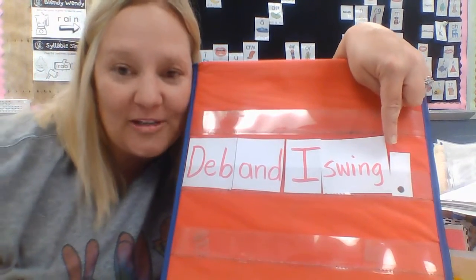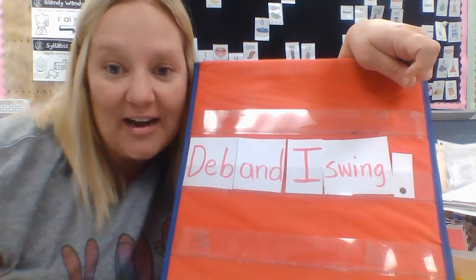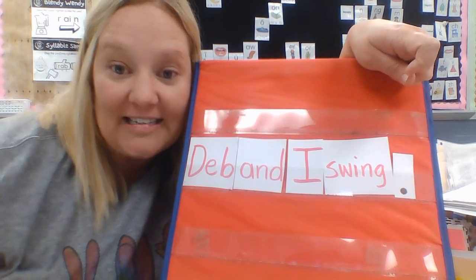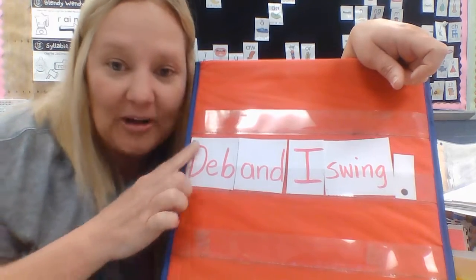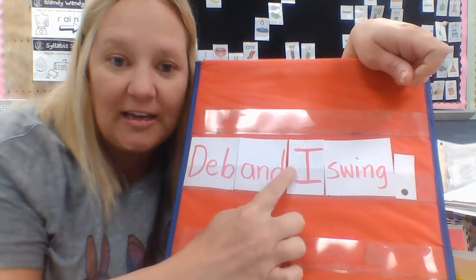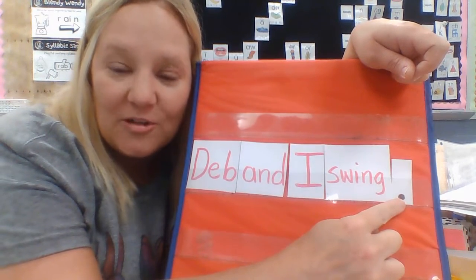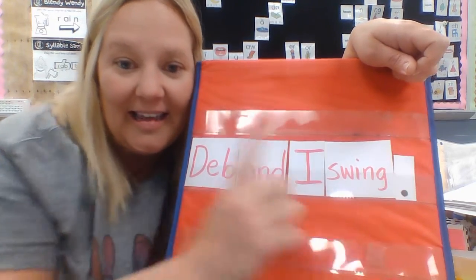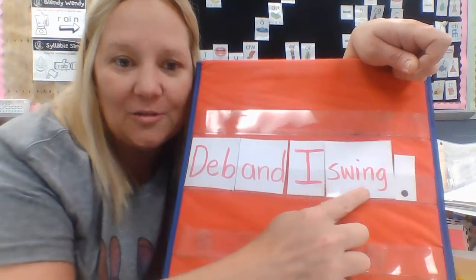So remember, boys and girls: sentences have to make sense, they have to sound right, they have to look right, and you have to be able to understand the meaning. You have to make sure that a sentence has an uppercase capital in the beginning, spaces between words, and a punctuation mark at the end — which will be a period, question mark, or exclamation mark. In this sentence, it's a period: Deb and I swing.